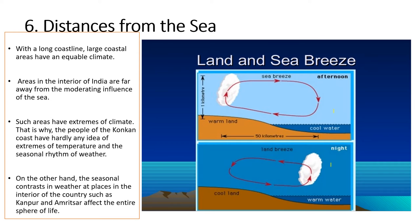Delhi's temperature variation is higher because Mumbai, which is located near the sea coast, has temperatures in January and July varying approximately between 24 to 27 degrees Celsius. Whereas Delhi, which is situated far from the sea coast, has temperatures ranging from 14 degrees in January to above 31 degrees in July. This is how we can explain this factor — distance from the sea coast affecting the climate of India.